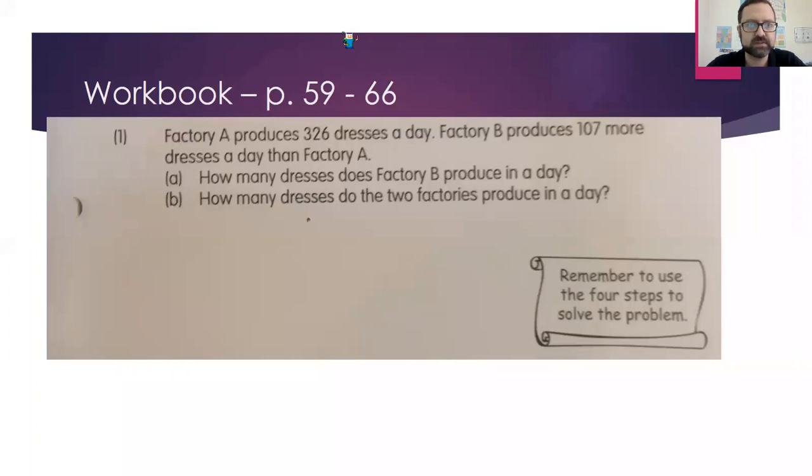Factory A produces, that means makes, 326 dresses a day. Factory B produces 107 more dresses than Factory A. The questions we are answering: how many dresses does Factory B produce in a day? How many dresses do the two factories produce in a day? And here's our wonderful reminder: remember to use the four steps to solve the problem.